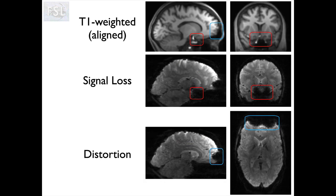Here's an illustration of what you can see. The top row shows a structural image with two highlighted areas. The red box is an area of signal loss — inferior frontal and temporal lobes — and you can see in the functional image on the second row how much signal is lost there. In the blue box at the bottom, you can see an area where the signal hasn't disappeared but has been pushed into the wrong location, so it doesn't match well with the structural image above.